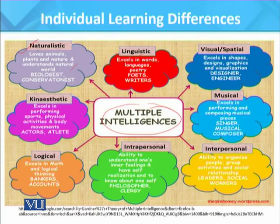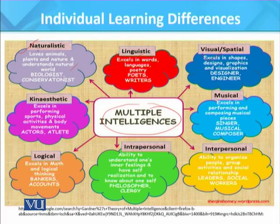Visual-spatial intelligence involves sensitivity to color, line, shape, form, space, and the relationships that exist between these elements. This type of intelligence revolves around activities such as working on a jigsaw puzzle, taking filmmaking classes, cutting out favorite pictures from magazines, and paying close attention to television advertisements, films, and videos.